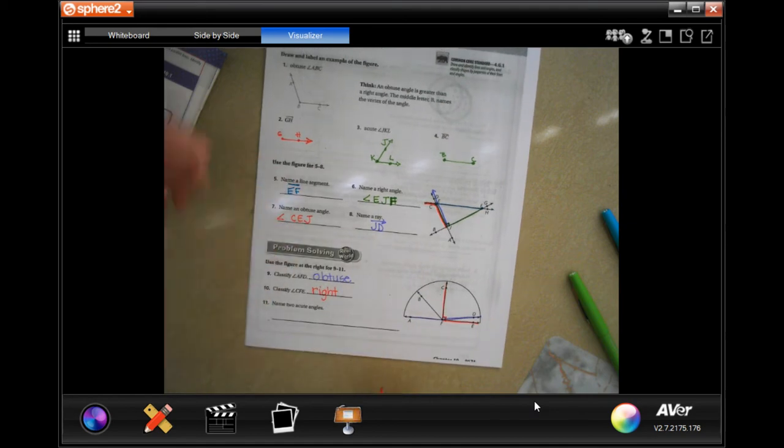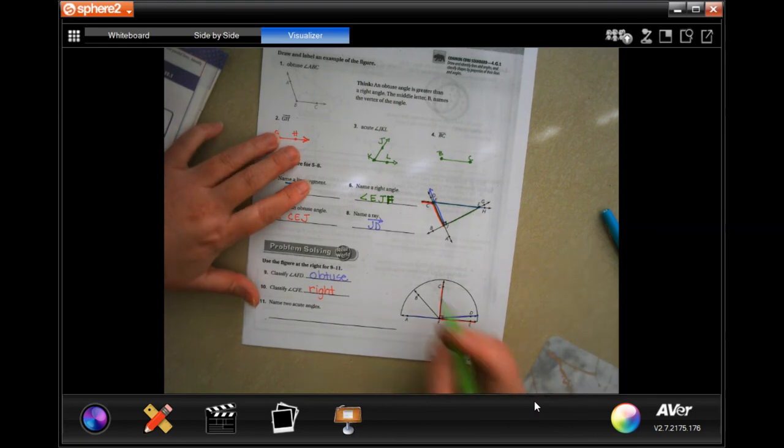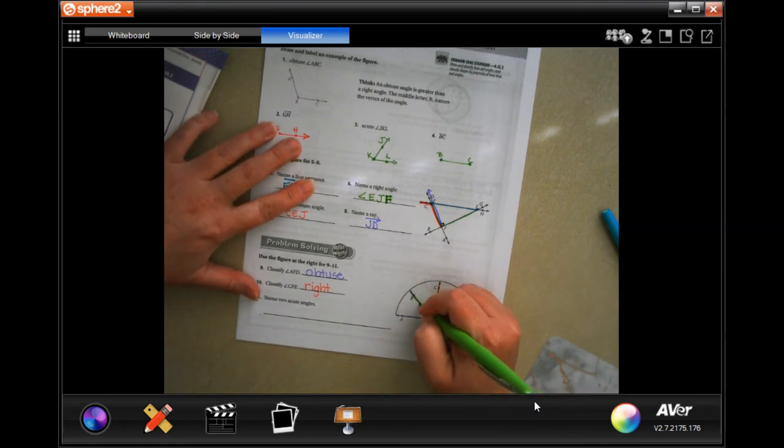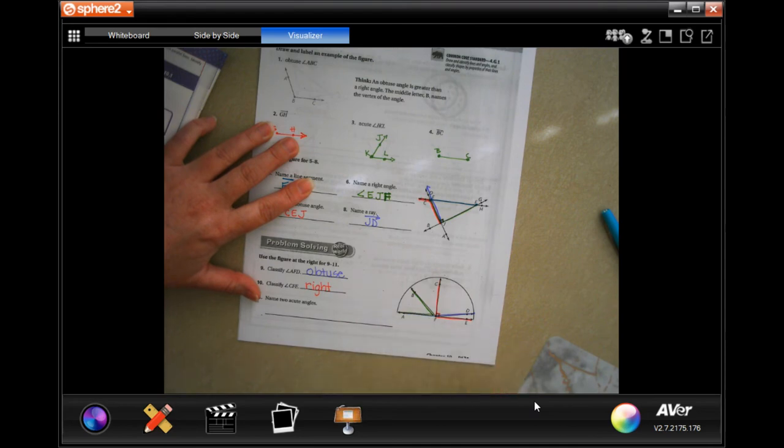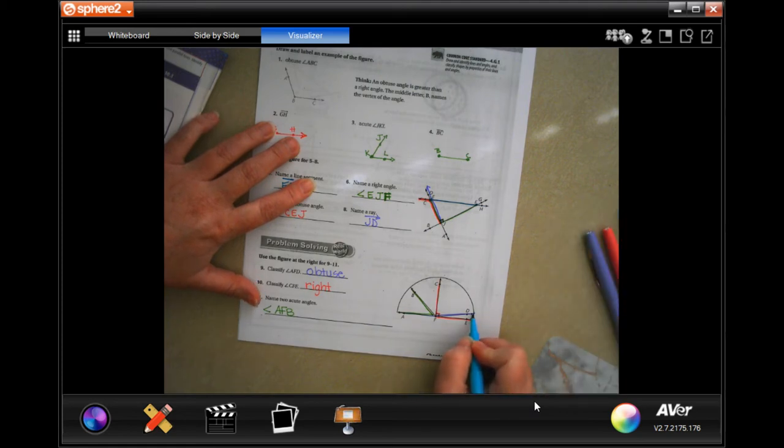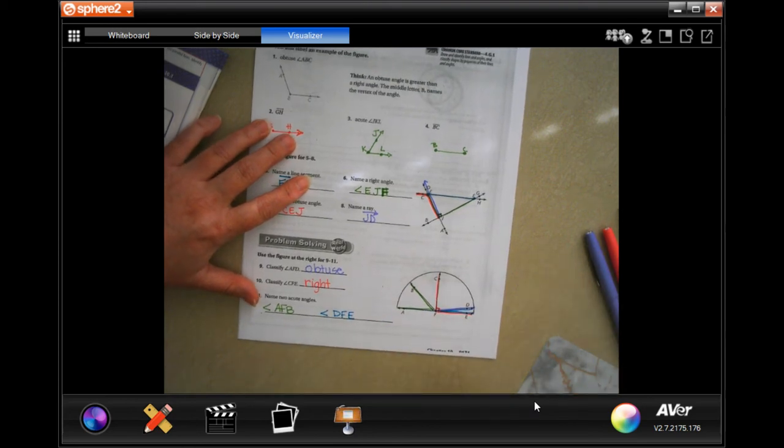Now it wants two acute angles. Here's one right here. We have angle A, F, B, and we have angle D, F, E. Hopefully you can see my colors.